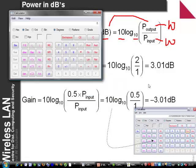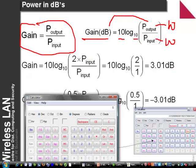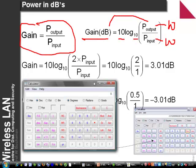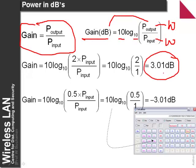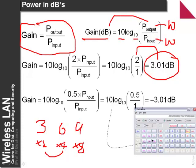Two key definitions: when we multiply the power by 2, we take log base 10 and multiply by 10, giving 3.01 dB. So doubling power gives a gain of 3 dB. Halving the power gives minus 3 dB. Every doubling in power gives 3 dB — 3 dB is times 2, 6 dB is times 4, 9 dB is times 8. Similarly, halving gives minus 3 dB, a quarter gives minus 6 dB, an eighth gives minus 9 dB.